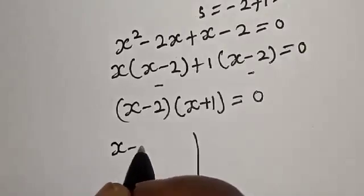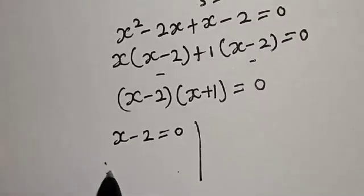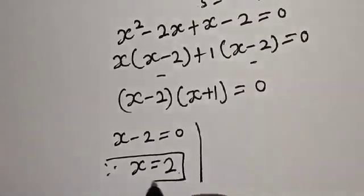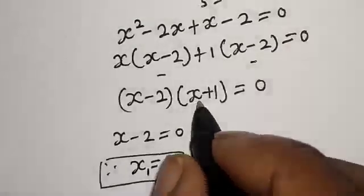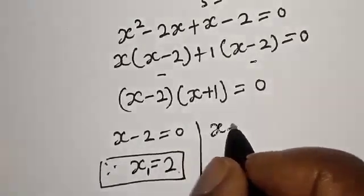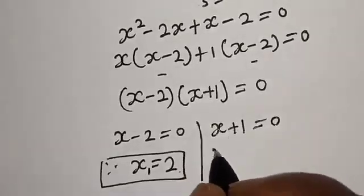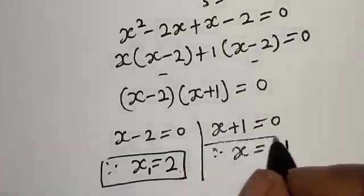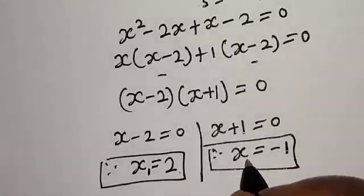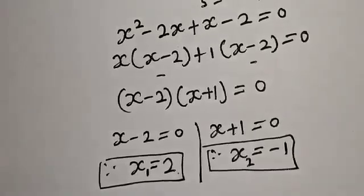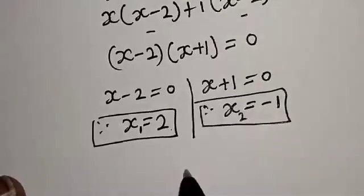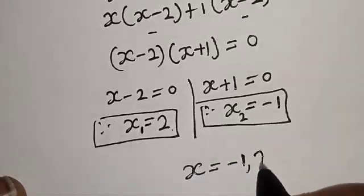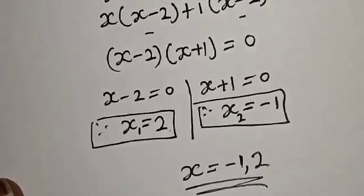There are two cases. The first case: s minus 2 equals 0, therefore s equals 2. That is the first value, s₁. The second case: s plus 1 equals 0, therefore s equals minus 1. That is the second value, s₂. Our final answer is s equals 2 and s equals minus 1.